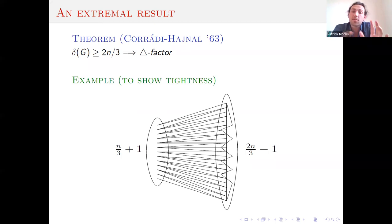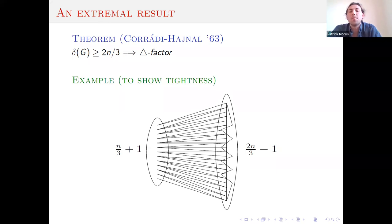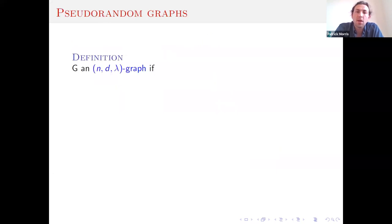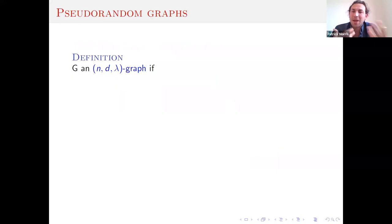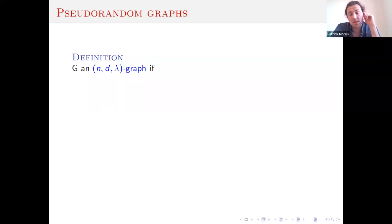If you think about this example, and in fact all examples close to tight, they seem quite contrived and far from typical — in particular, they have large independent sets. So in order to capture more graphs that have triangle factors, sparser graphs, we could hope that if we impose some typicality, some pseudorandom conditions on the graph, we actually capture much more. This can be made formal by looking at pseudorandom graphs.